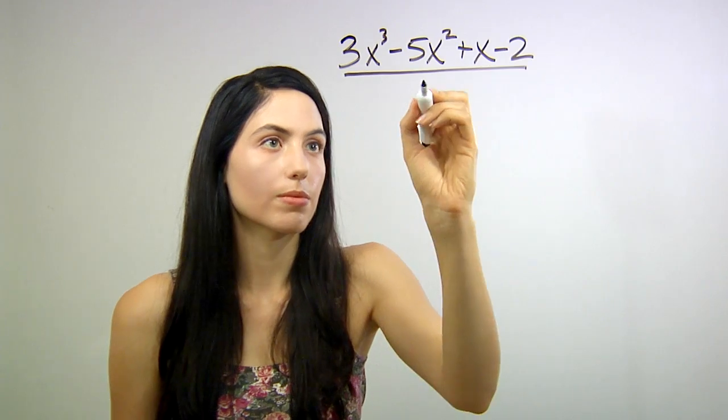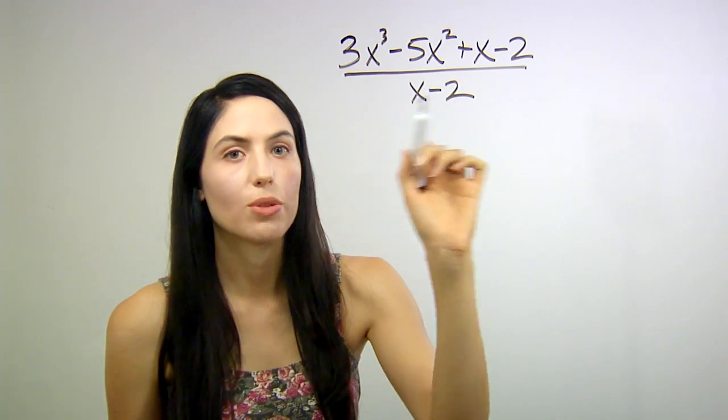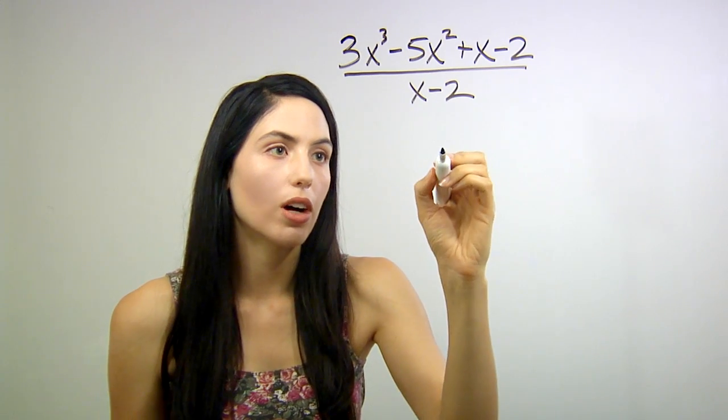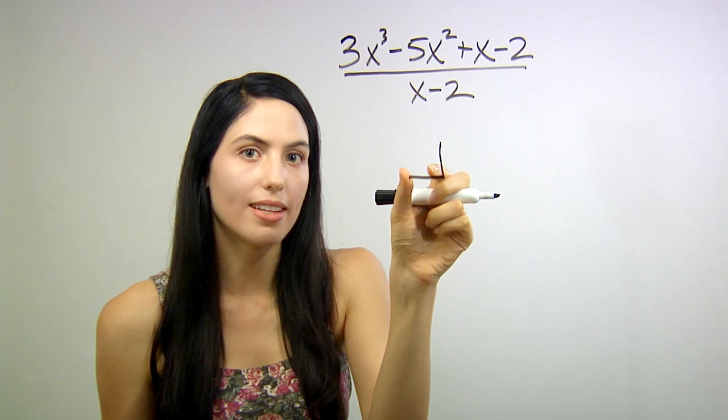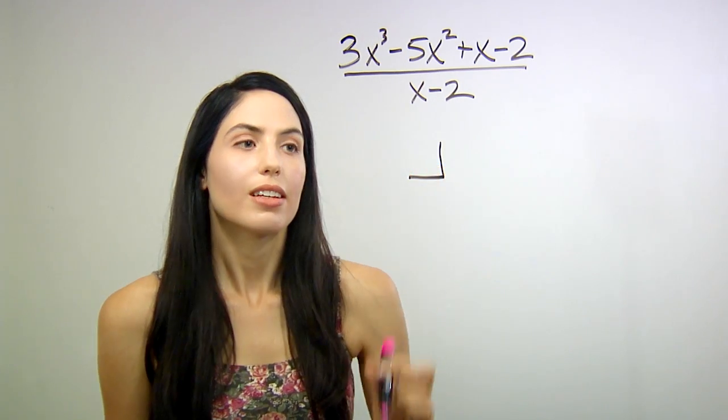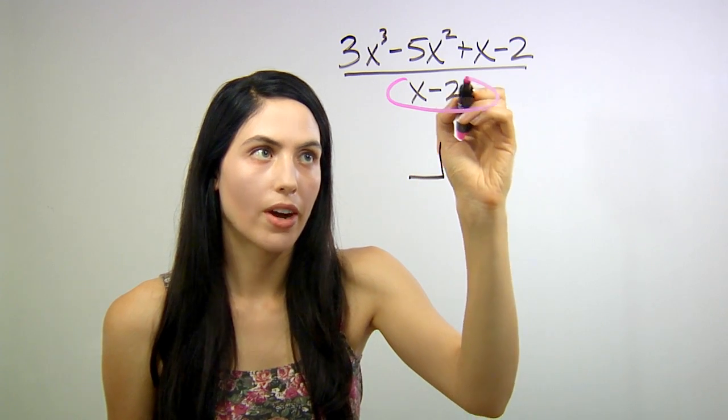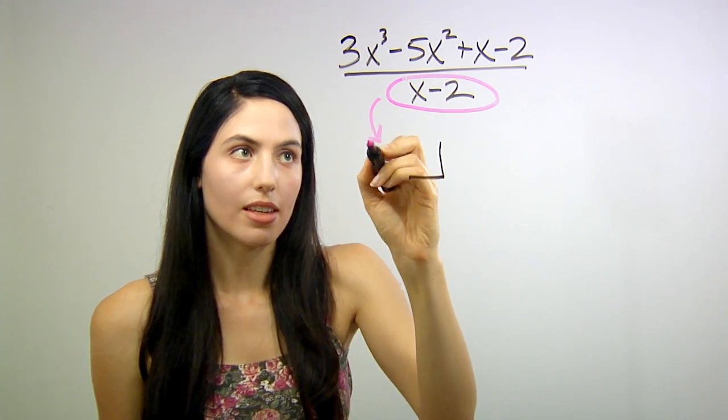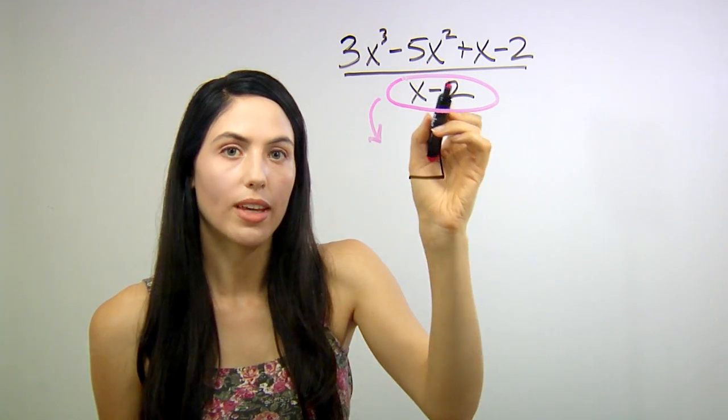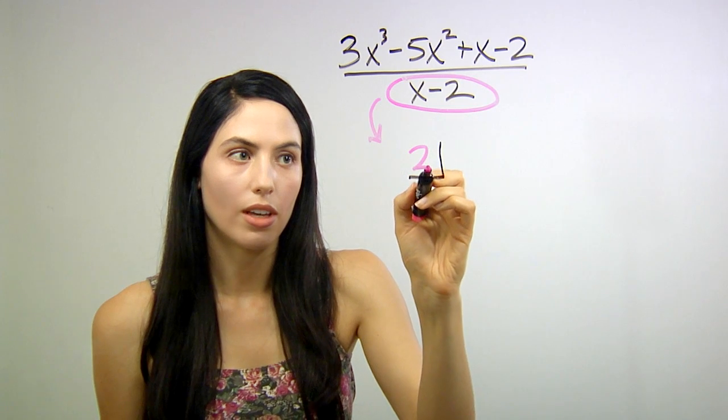So let's look at an example. Okay, say you have this synthetic division problem. Your first step is to draw a little corner here, like that, and you're going to place a number there. So the number that you put there is whatever makes your bottom of your fraction equal zero. So in this case, if we plugged in 2 for x, we would get zero in the denominator. So we put 2 as the constant.